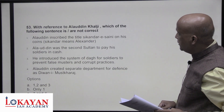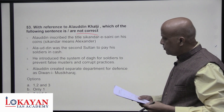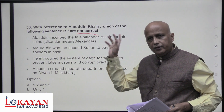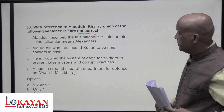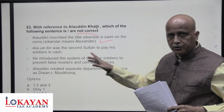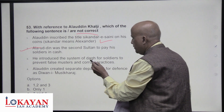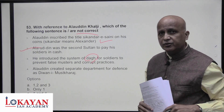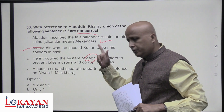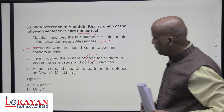Regarding Alauddin Khilji — which statements are not correct? Alauddin inscribed 'Sikandar-i-Sani' (Second Alexander) on his coins — correct. Alauddin was the first sultan (not second) to pay his soldiers in cash — so that statement is incorrect. He introduced the system of Dagh for horses and Chehra for soldiers — not the reverse. Diwan-i-Arz was the department of defense — so only the fourth statement is correct. Statements two, three, and four (of the incorrect list) mean answer is D.